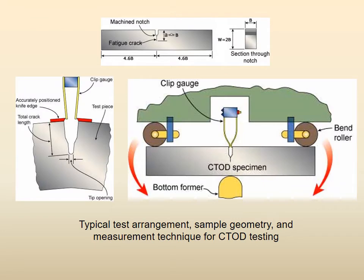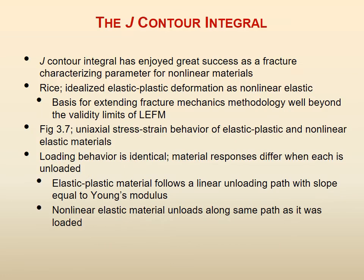We showed you practically how this determination of CTOD is done in a schematic fashion, not the actual machinery and sample size used. Then we started talking of the second measure of fracture toughness in elastic plastic fracture mechanics: the J contour integral.